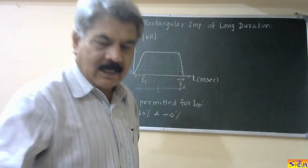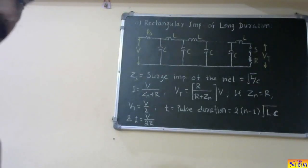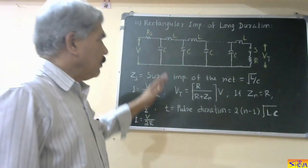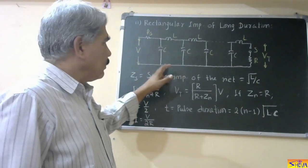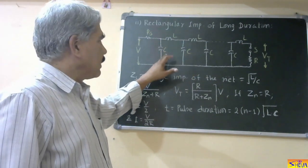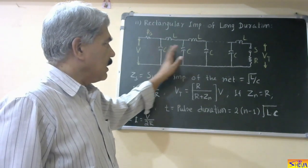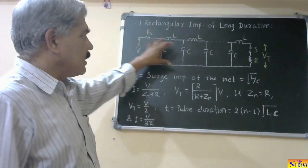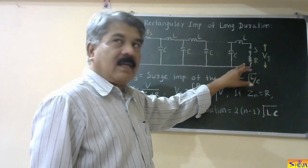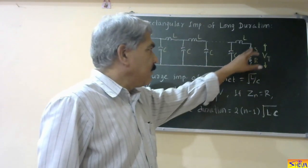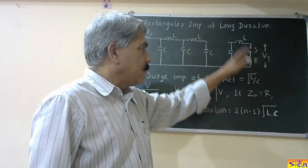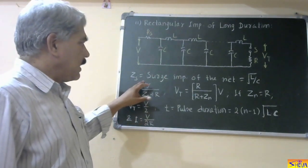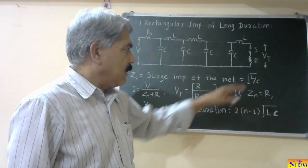To generate the rectangular impulse of long duration, we require a pulse network. The pulse network consists of N sections of LC parameters. R is the starting resistor, V is the voltage for charging the capacitors, S is the spark gap, R is the dynamic resistance of the test object, Vt is the voltage appearing across the test object, and I is the current through the test object. Z is the surge impedance of the network, given by √(L/C).